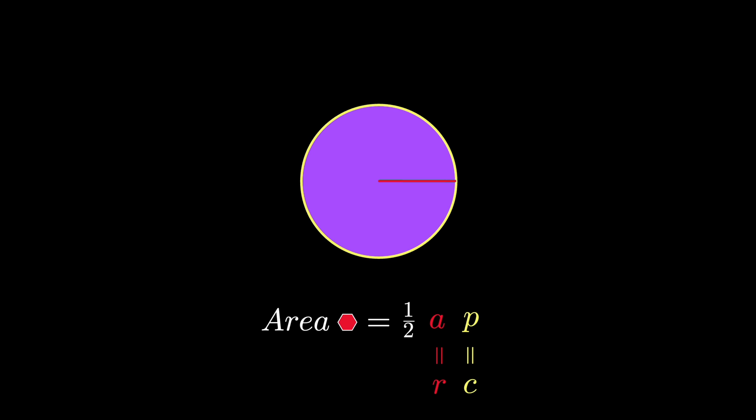Therefore, the area of an infinite sided polygon, or the area of the circle, is half the radius times the circumference. And when it was discovered later that the circumference is equal to 2πr, with basic simplification we obtain the familiar formula for the area of the circle, πr².